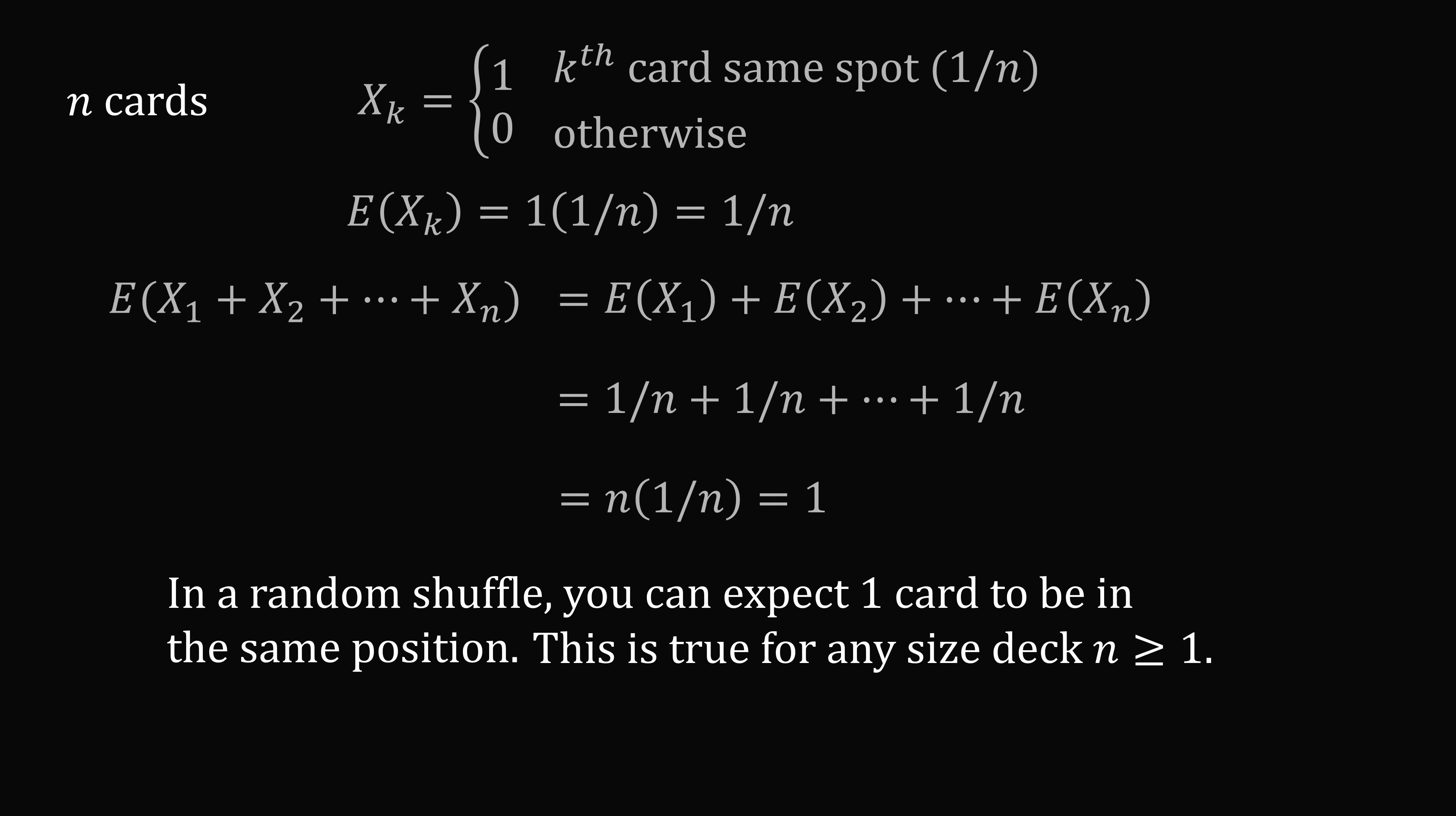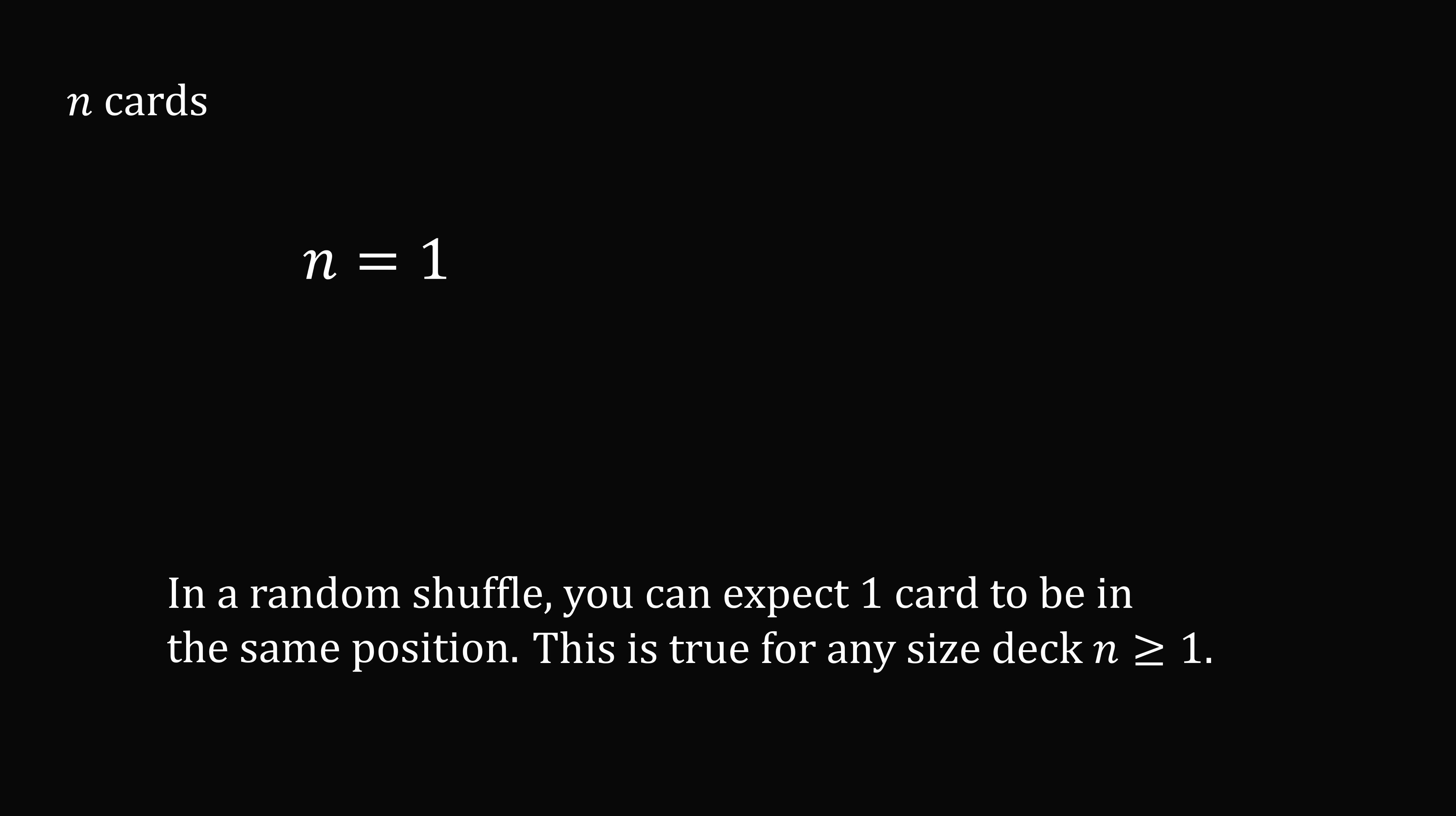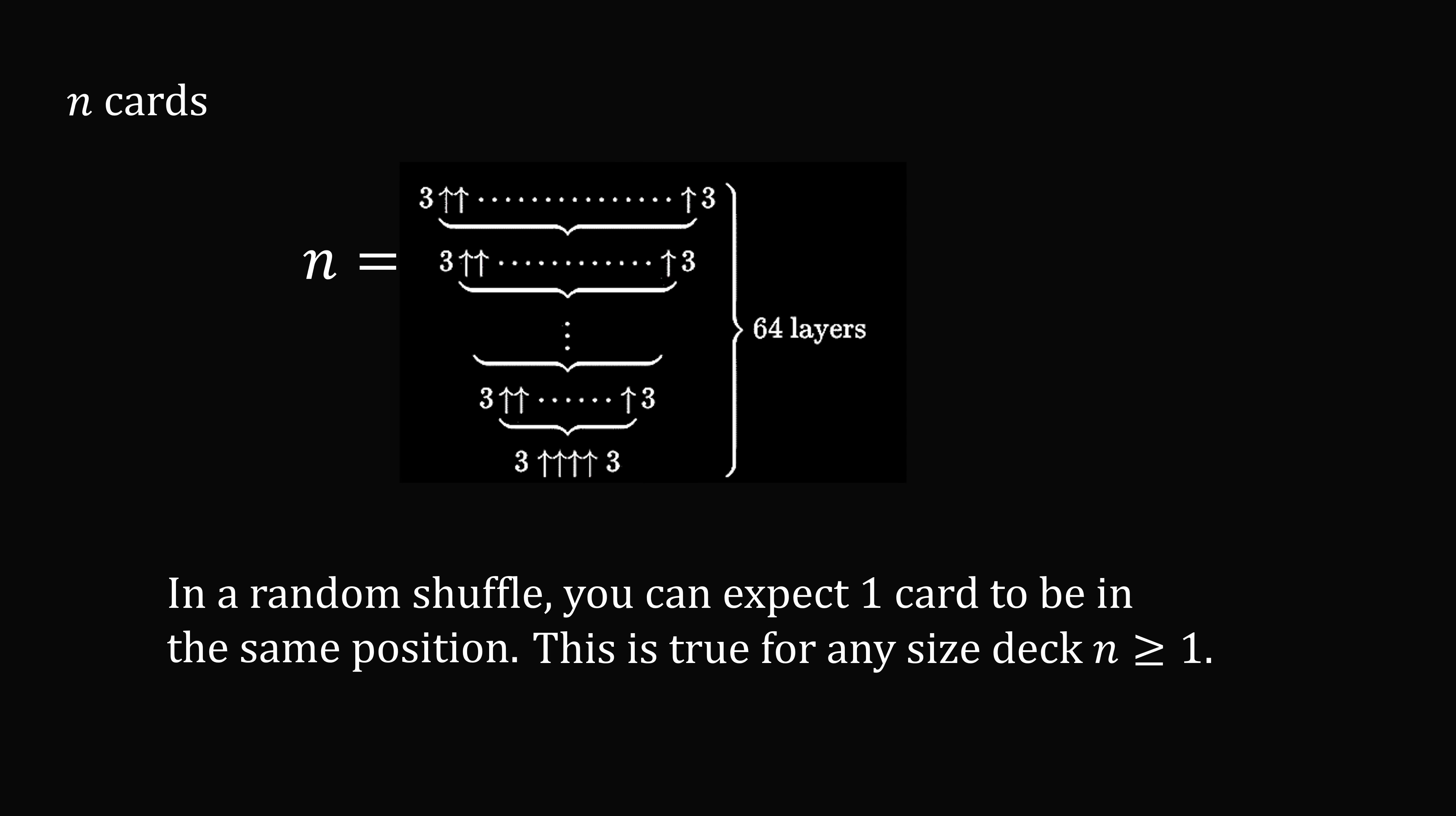So it could be a deck of just 1 card, or 10 cards, or 100 cards, or 1000 cards, a myriad of cards, 1 lakh of cards, 1 million of cards, 1 crore of cards, 1 billion of cards, a googol of cards, or even Graham's number of cards. In a random shuffle, you can expect one card to be in the same position after shuffling. What a surprising result!